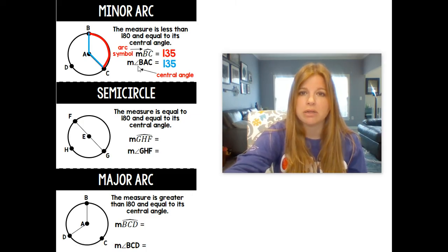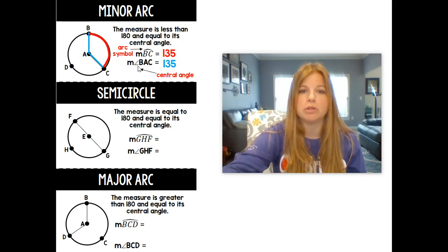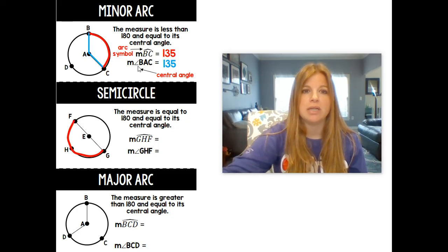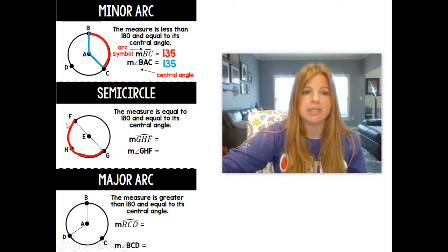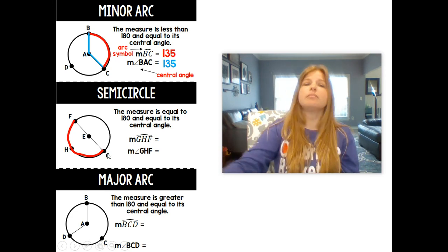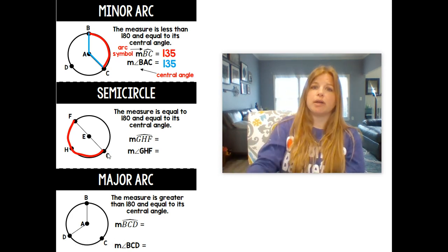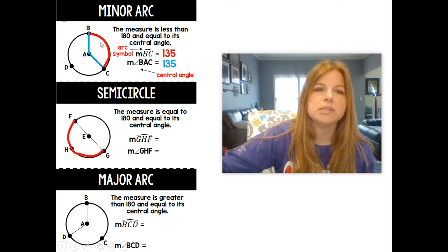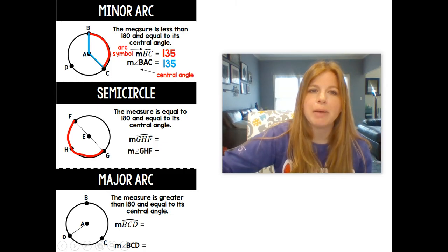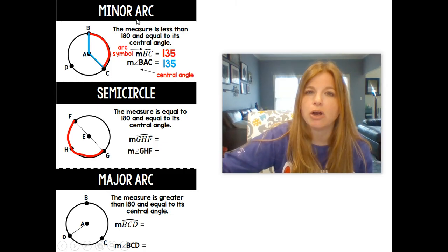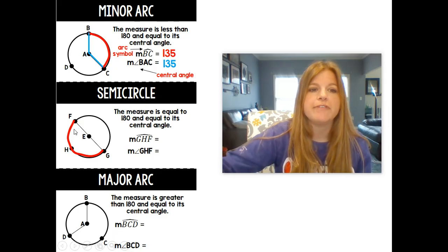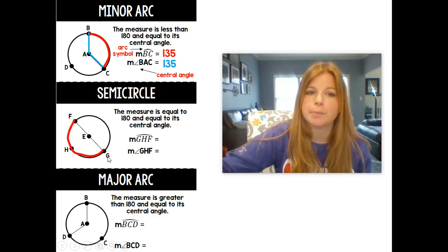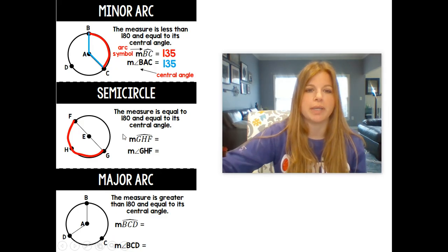A semicircle is half of the circle, and it's actually equal to 180 degrees. So this would be an example of a semicircle. A semicircle, if I follow the letters, would be G, H, F. I could also call it arc F, H, G, but I need those letters going around the circle in that order. Also notice BC only had two letters in it. That would mean it's a minor arc. It's going to be an arc that's less than 180. If I have three letters to name an arc, it's going to be 180 or more, which is going into that major arc.